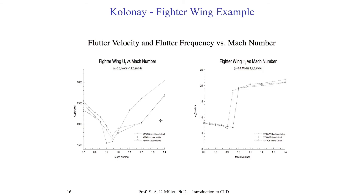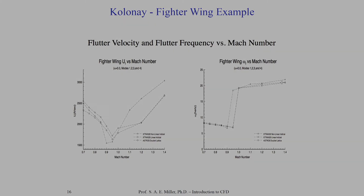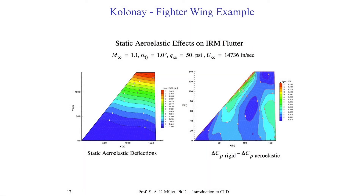Looking at the results for this case: we have flutter velocity versus flutter frequency. As Mach number increases, flutter is induced — the rapid oscillating motion of the wing. On the right y-axis is flutter frequency versus Mach number, and on the left is fighter wing incoming velocity versus Mach number. Up through about Mach 0.9, we have a very low frequency with no problem. But at a particular transonic value and into supersonic speeds, there is a huge jump and flutter is induced. We can also look at pressure coefficient values for the rigid versus aeroelastic wing, examining wing deformation through its flutter frequencies.